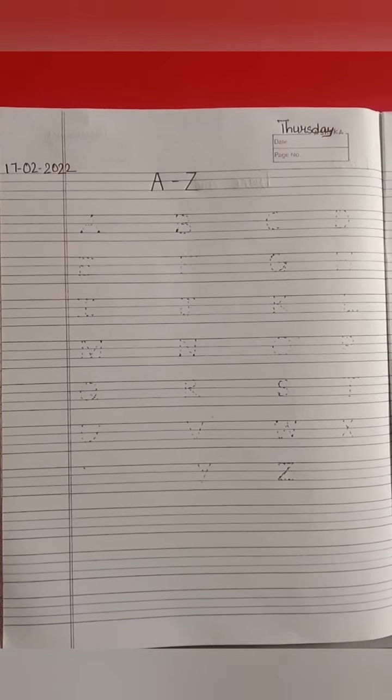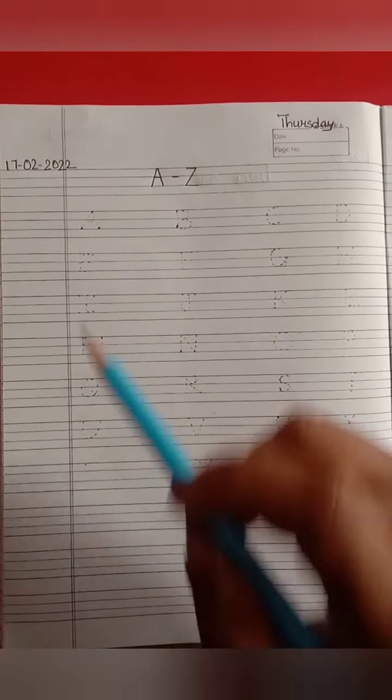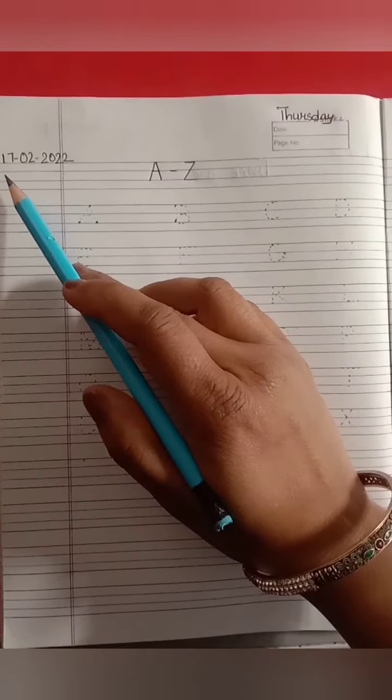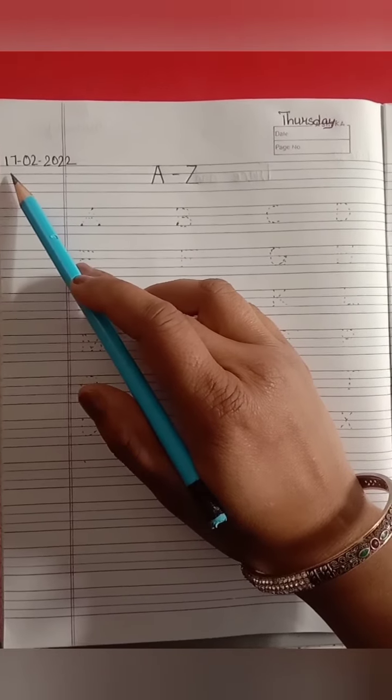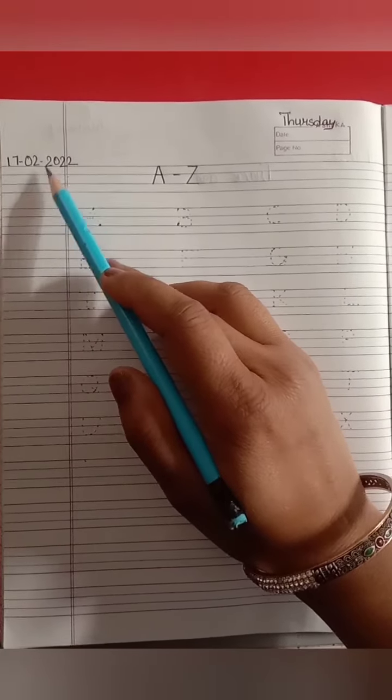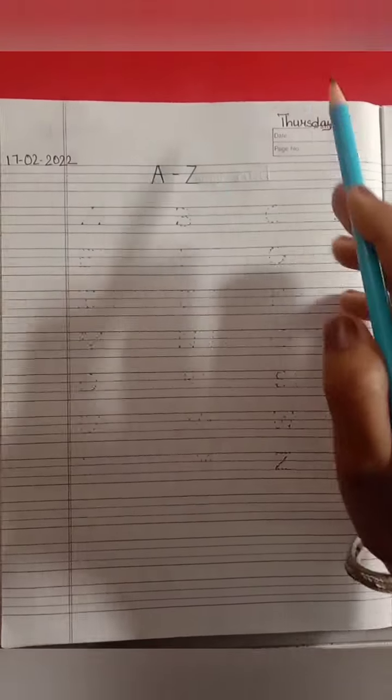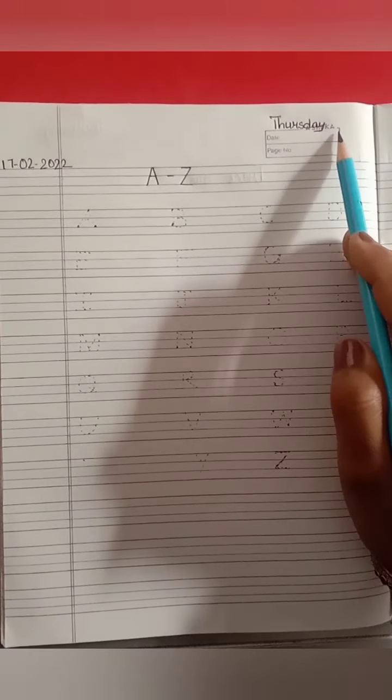Children, today we will trace the letter from A to Z. First of all, tell me what is the date today? Today is 17 February 2022 and the day is Thursday.